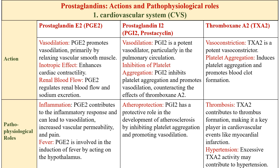Let's start with the effect of prostaglandins on the cardiovascular system. Prostaglandin E2 promotes vasodilation primarily by relaxing the vascular smooth muscles. It also has an inotropic effect, enhancing cardiac contractility, and it regulates the renal blood flow. The role of prostaglandin E2 in the body is in inflammation and fever.